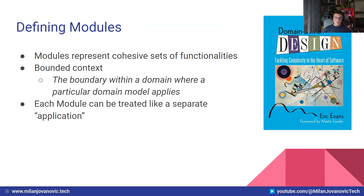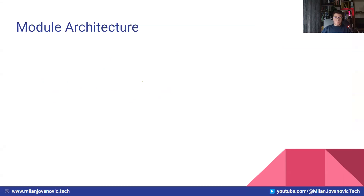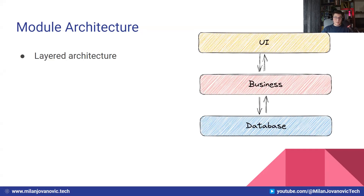One way to envision modules is that each module can be treated as a separate application. This also has implications in how you define a module in your actual code. I want to discuss how you actually architect an individual module once you've figured out what features belong to it. You can envision a module as a separate application, which means you need to apply some sort of architecture to your module, and you're going to have many modules potentially inside your modular monolith. One example architecture you can apply is the layered architecture, which is very standard — you have three layers: one for your user interface (which in our case is probably an API), one for your business logic, and one for the database.